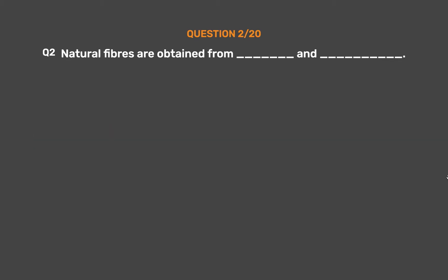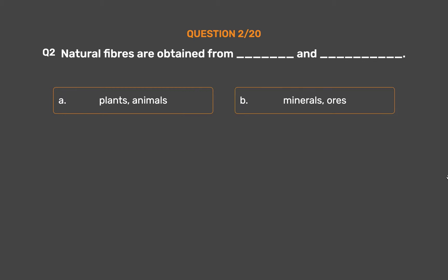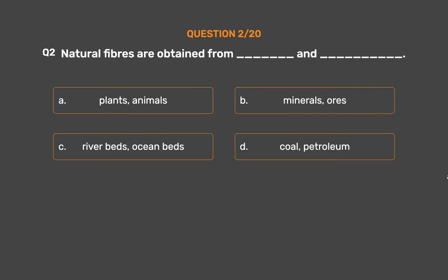Question number 2. Natural fibers are obtained from __ and __. Option A, Plants and Animals; Option B, Minerals and Ores; Option C, River beds and Ocean beds; Option D, Coal and Petroleum.